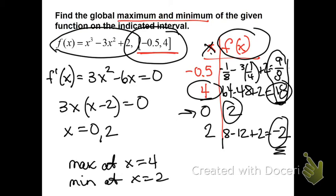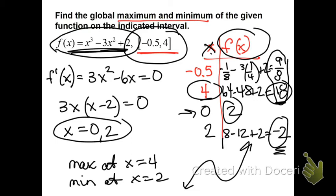Graphically, the original function is a cubic, so it goes like a positive cubic. x equals 0 is here, x equals 2 is here — those are the critical points, and their y-values are in the chart. By closing the interval and chopping off the arrows, we're comparing whether those endpoints are higher or lower than the critical points.